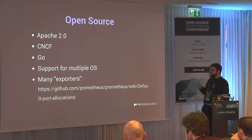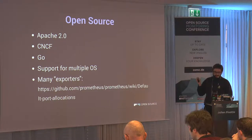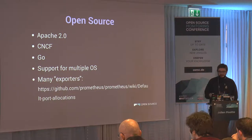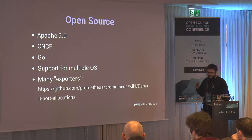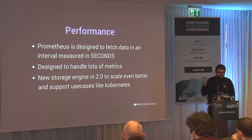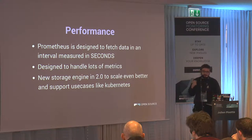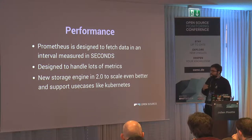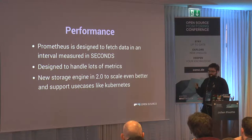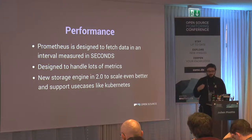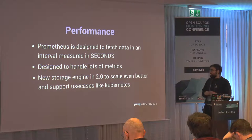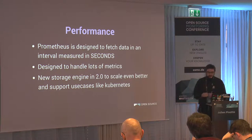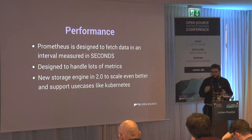There are more than 100 integrations for third-party software available out of the box. When it comes to performance, Prometheus is designed to fetch a lot of data — not every five minutes, but very frequently. In version 2.0, which came out one or two weeks ago, they made it even better with their own storage engine. For new use cases like Kubernetes, it's much more efficient. It doesn't take too much space for what it stores, and CPU and memory usage are also fine.